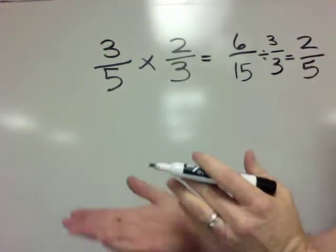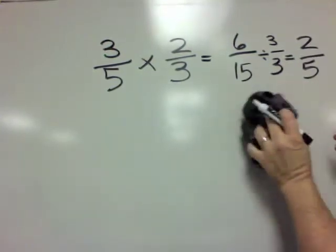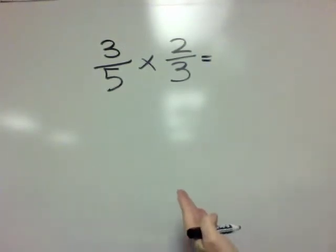So this multiplication problem gives us the answer 2 fifths. Now there are some things you could do to make this quicker and shorter and easier. It's called cross-cancelling.